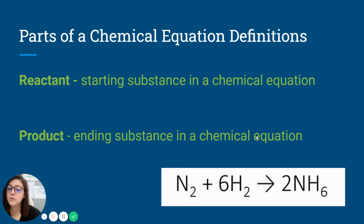So just to remind you, reactants are the starting substances in a chemical equation. That's what is on the left-hand side of the arrow, before the arrow. The product is the ending substances in a chemical equation. That's what's after the arrow because that's what is made through the chemical reaction.